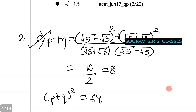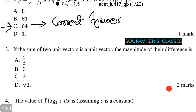Let's see another very nice question from ACET 2017. The next question says: if the sum of two unit vectors is a unit vector, then the magnitude of their difference is — let's see how to do it.